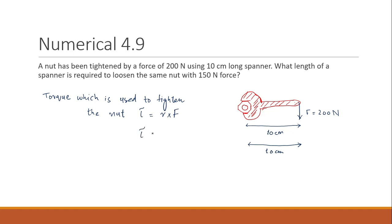First we convert 10 centimeters into meters by dividing by 100, giving 0.1 meters as the moment arm. So torque equals 0.1 meters multiplied by 200 newtons force. Therefore torque equals 20 newton-meters.